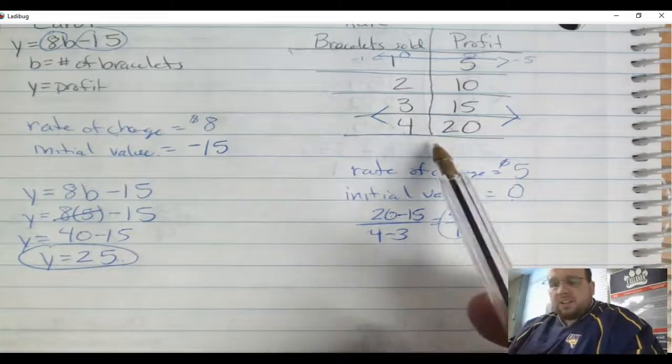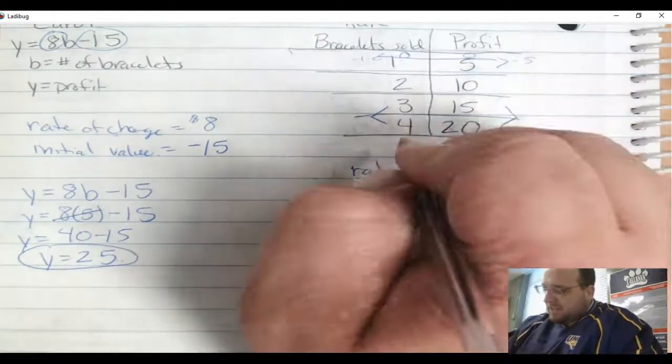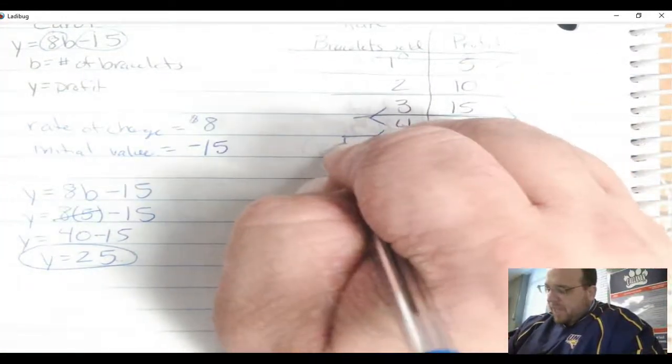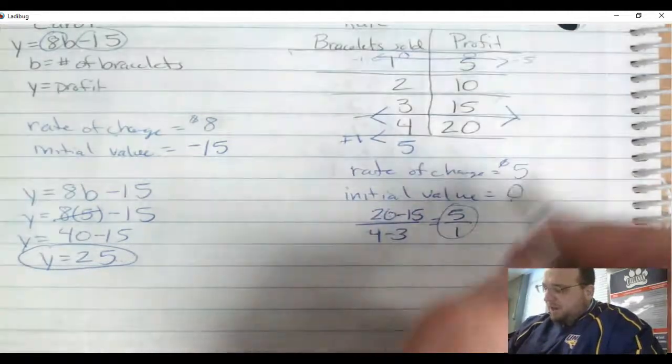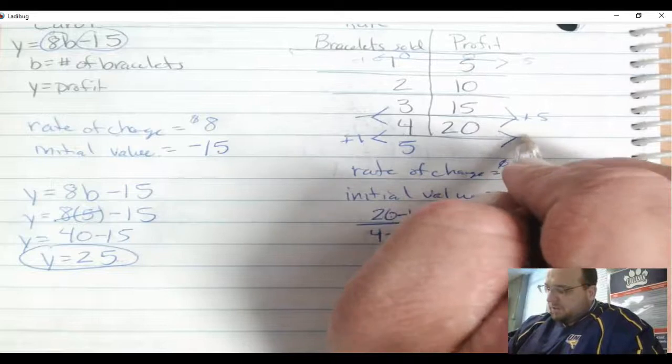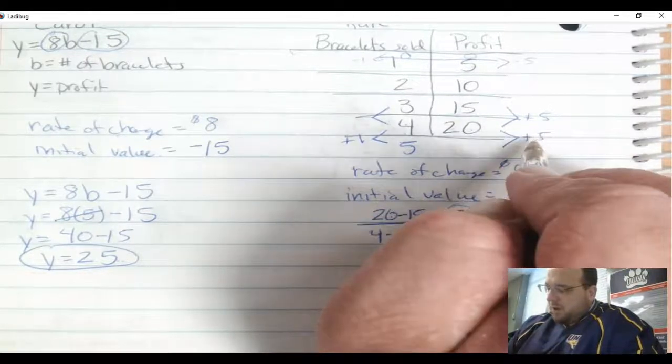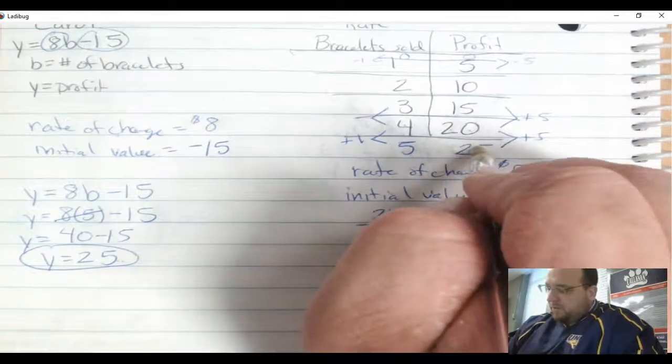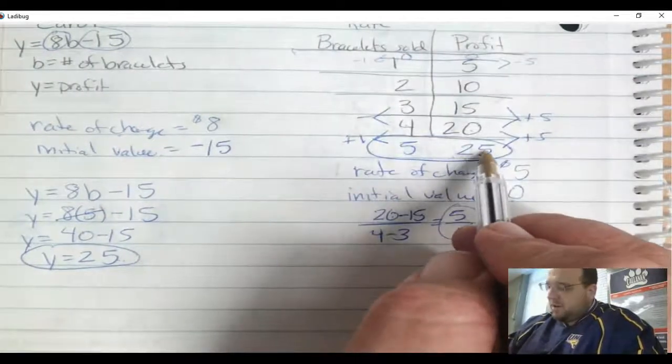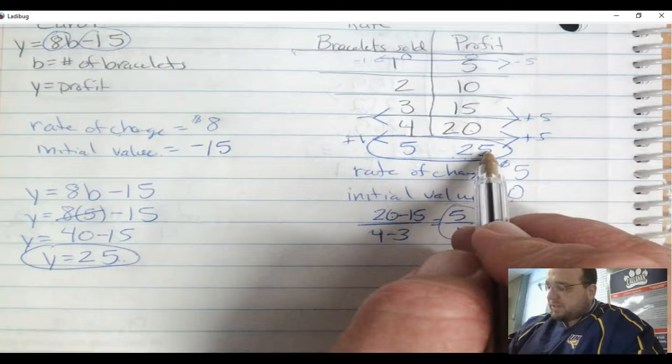Over here I notice that there is no 5 on the table, so I'm going to have to extend my table the other way. I'm going to have to go this direction - 4, 5. So I'm going to have to add 1. So if I'm adding 1, I'm going to have to go over here and add 5 from this one. So when I add 5 to 20, I end up with 25. So this lets me know that for 5 bracelets, Kate is going to make a profit of $25 also.